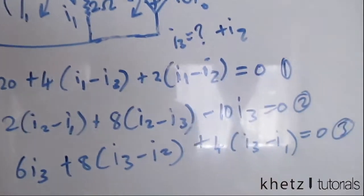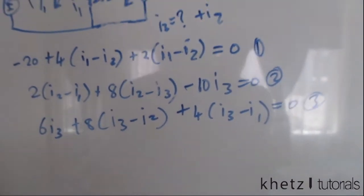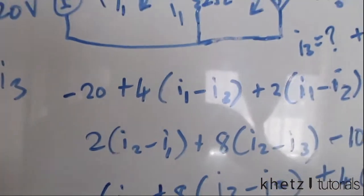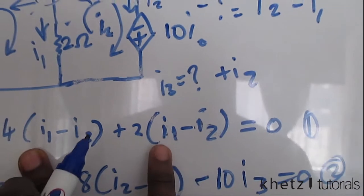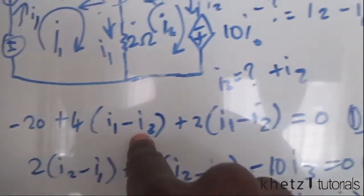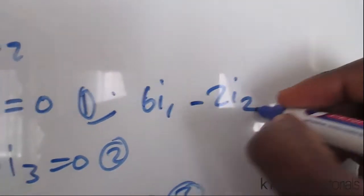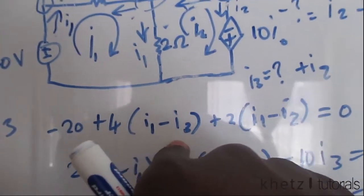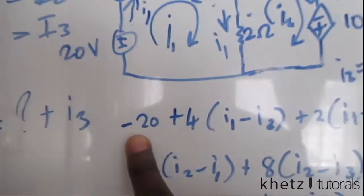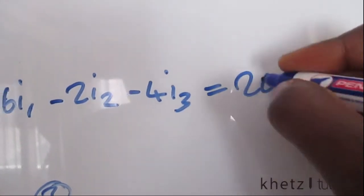Let's now proceed to simplify these equations so we can fit them in a matrix and apply Cramer's rule. For equation one: collecting terms, 4 plus 2 gives 6, so we have 6 I.1. We have negative 2 I.2. And we have negative 4 I.3. The constant negative 20 moves to the other side as positive 20. So equation one is: 6 I.1 minus 2 I.2 minus 4 I.3 equals 20.